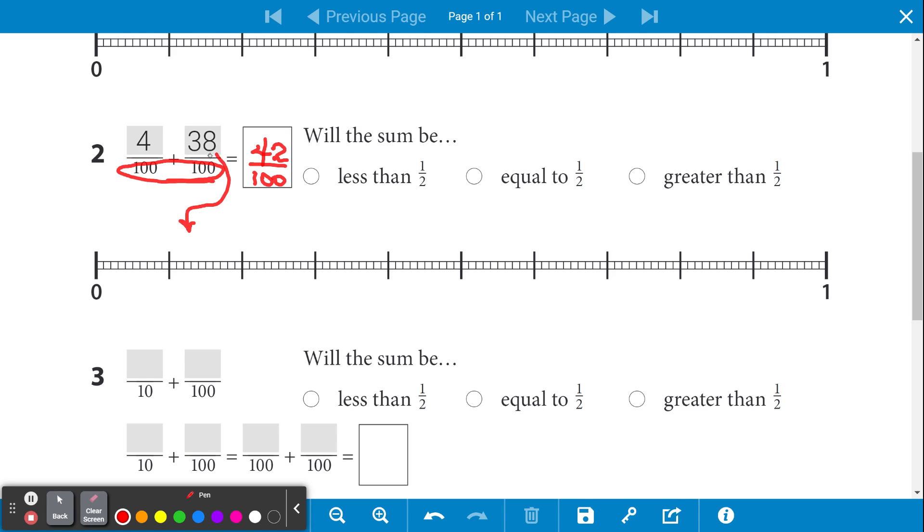So 38 is 2 less than 40, so I'll cover 10, 20, 30, and instead of coloring all the way to the 40, I'll color to the spot that's just 2 before that. And that indicates 38 one-hundredths.